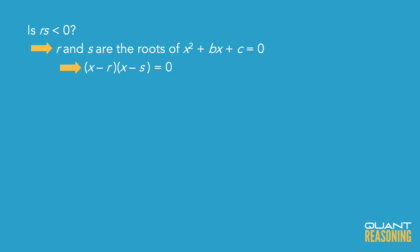Now if we simplify x minus r times x minus s equals 0, we get x squared minus xs minus rx plus rs equals 0. If we match that with x squared plus bx plus c, we realize that c equals rs.